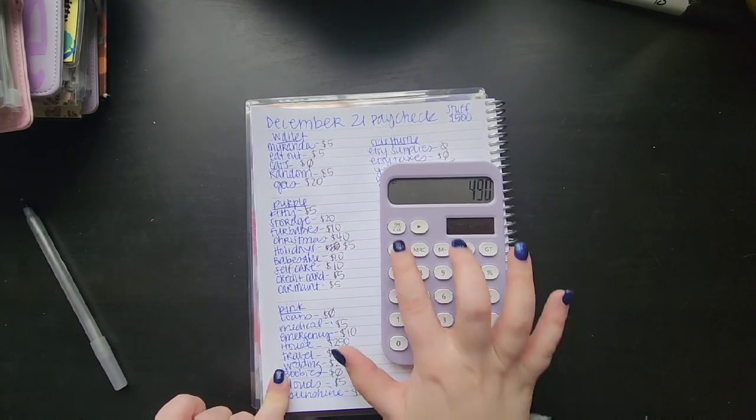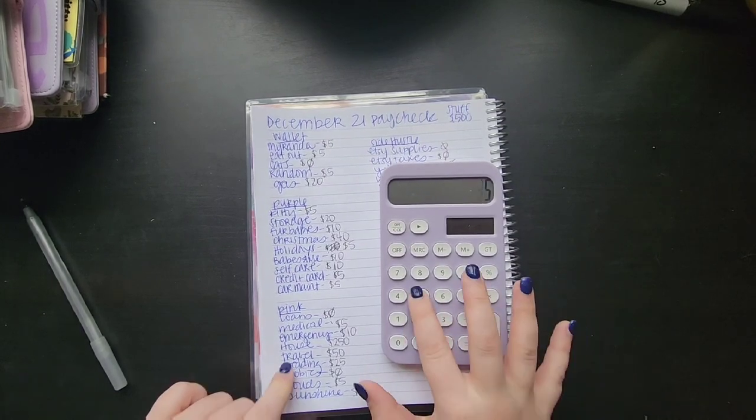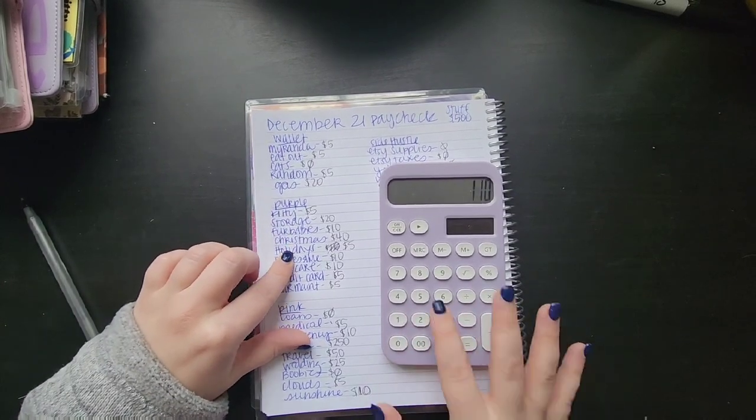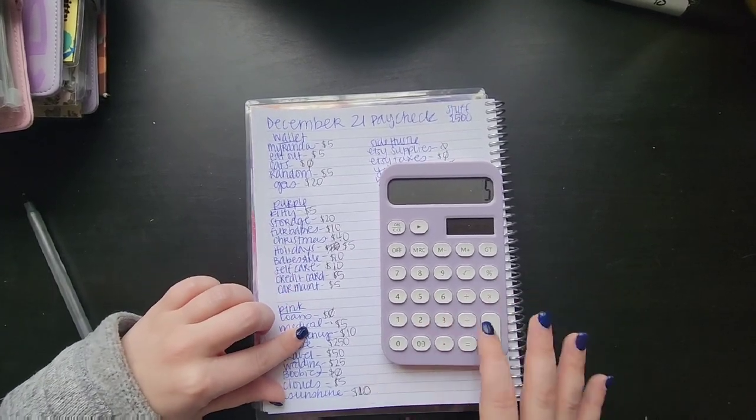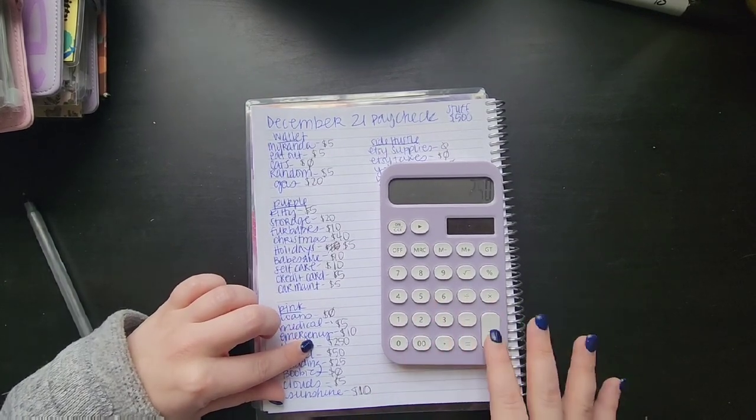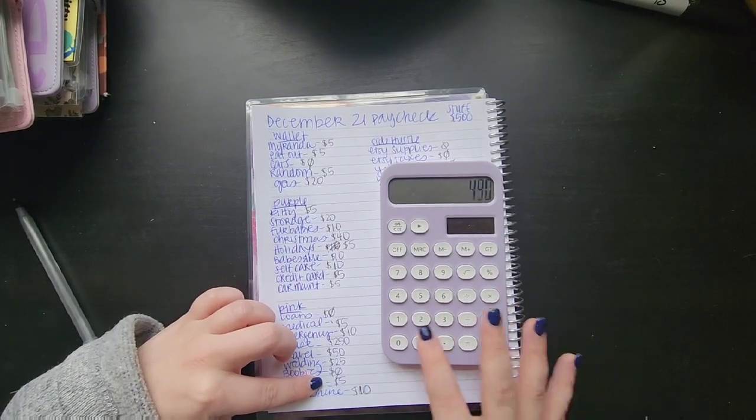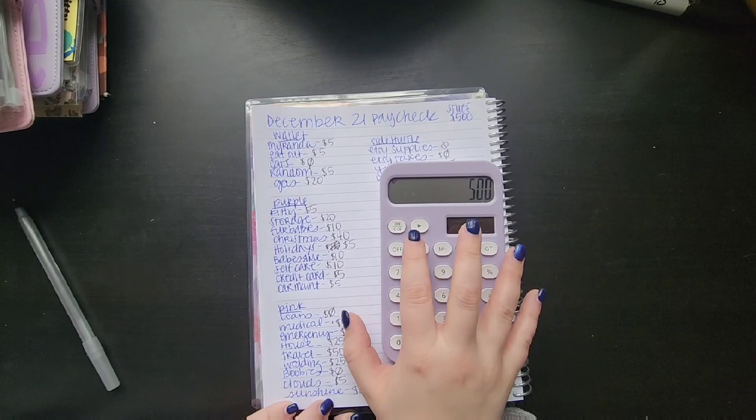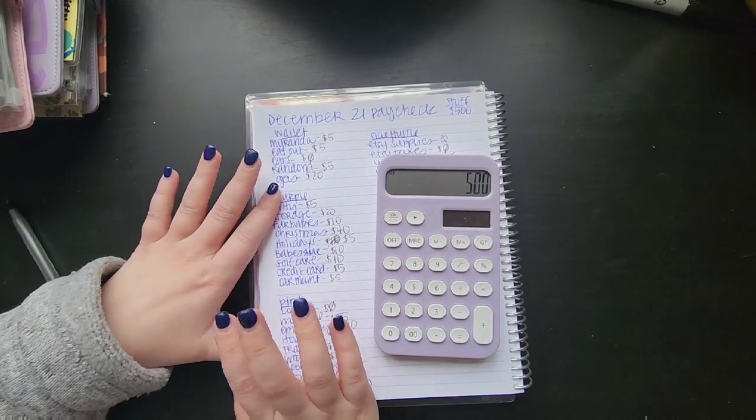Okay we'll try it again. Trying it again, five plus five plus five plus 20 plus five plus 20 plus 10 plus 40 plus 5 plus 10, 10, 5, 5, 5, 10, 250, 50, 25, 5, 10. There we go, 500. So I did do the math right, I just did the math on my calculator the first time. So that is how we're going to stuff the money next time I get paid.